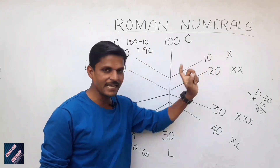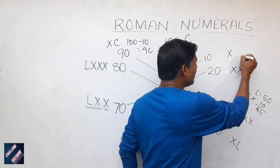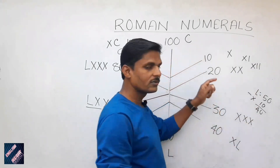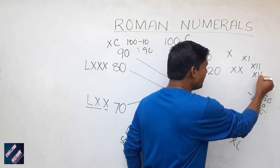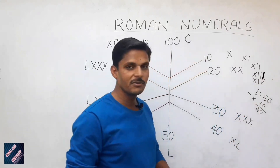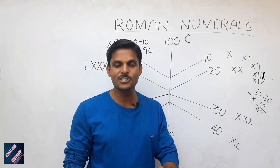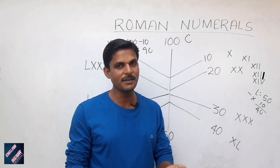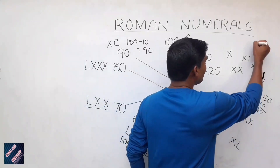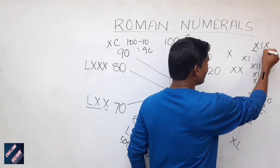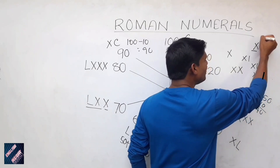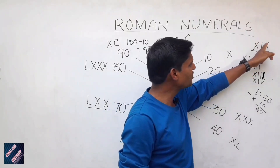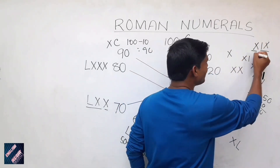So 10 is X. If you write 11, it is XI. 12 is XII. 13 is XIII. Then XIV is 14, XV is 15, XVI is 16, XVII is 17, XVIII is 18. XIX is 19 — X is 10, and IX is 9 because I is written before X, so 10 minus 1 equals 9. So XIX is 19.